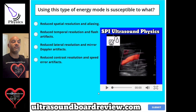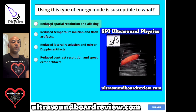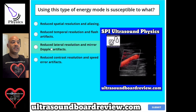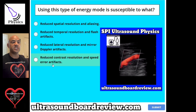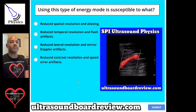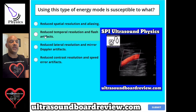Question 105. Using this type of energy mode is susceptible to what? A, reduce spatial resolution and aliasing. B, reduce temporal resolution and flash artifacts. C, reduce lateral resolution and mirror Doppler artifacts. Or D, reduce contrast resolution and speed error artifacts. The answer is B, reduce temporal resolution and flash artifacts.